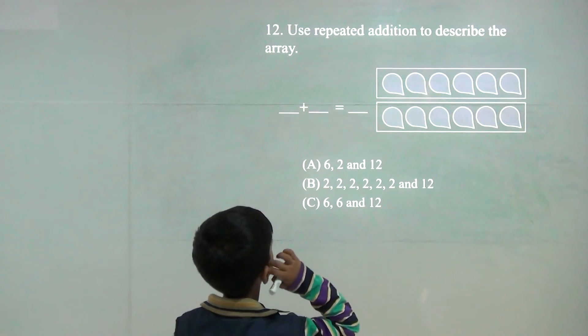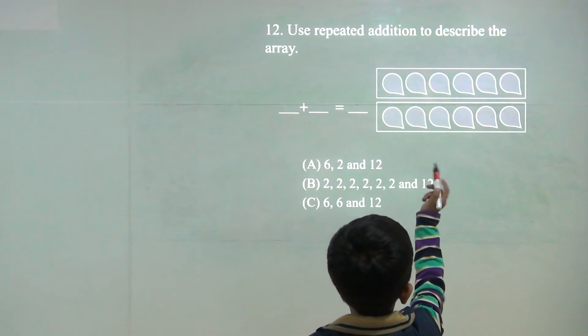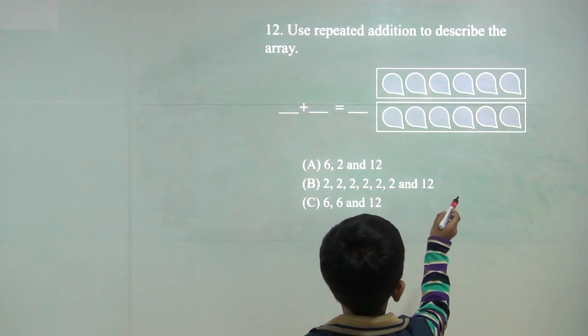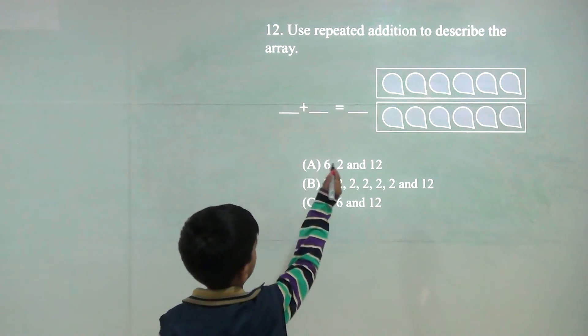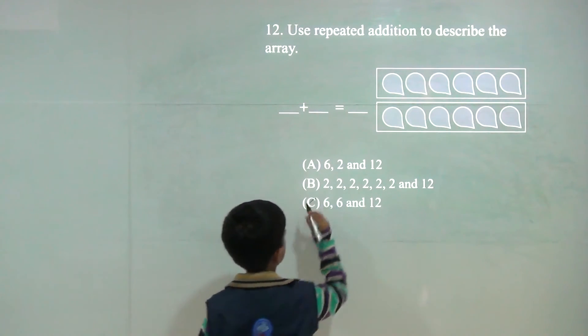Now there are 1, 2, 3, 4, 5 and 6. So 6 and 6 is equal to 12. So answer would be C.